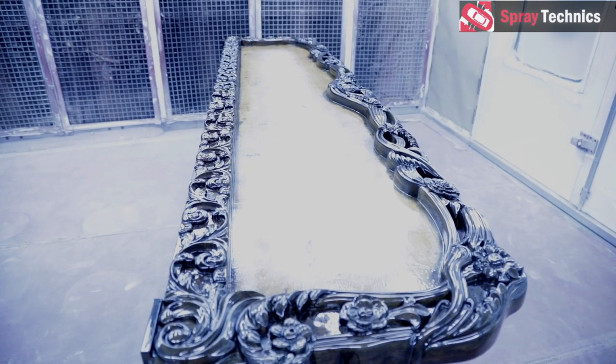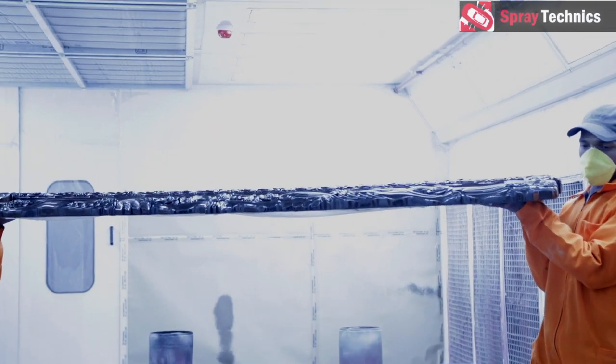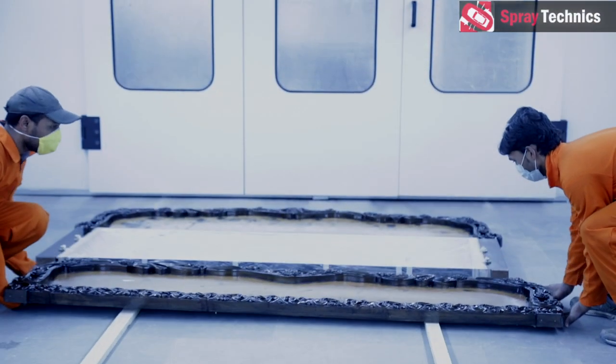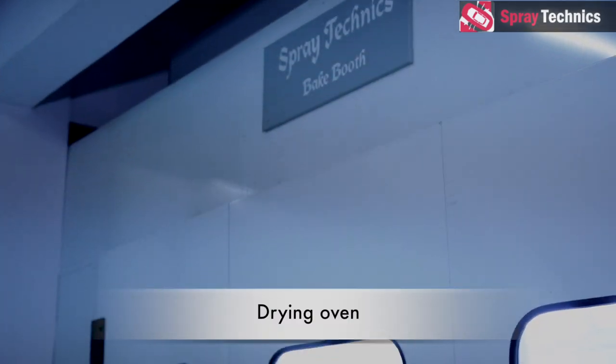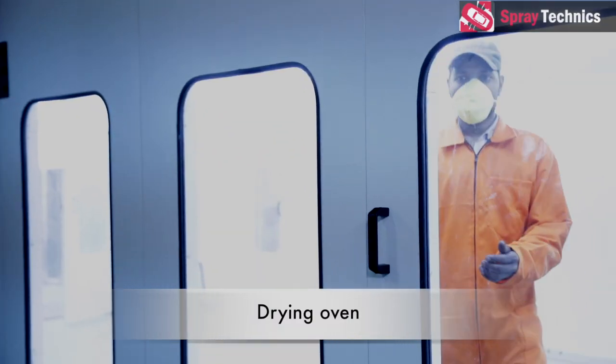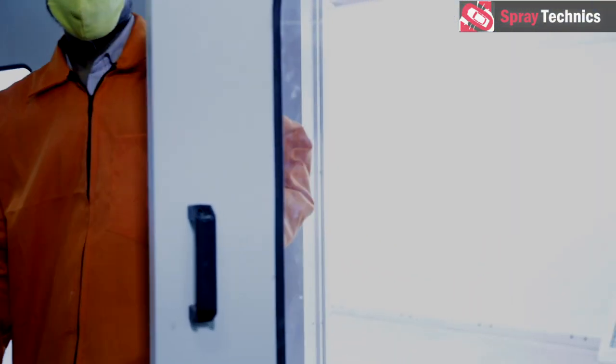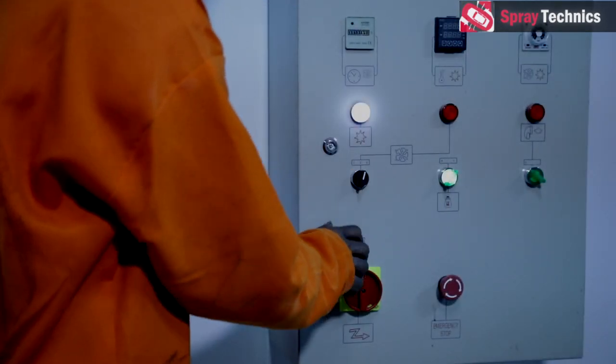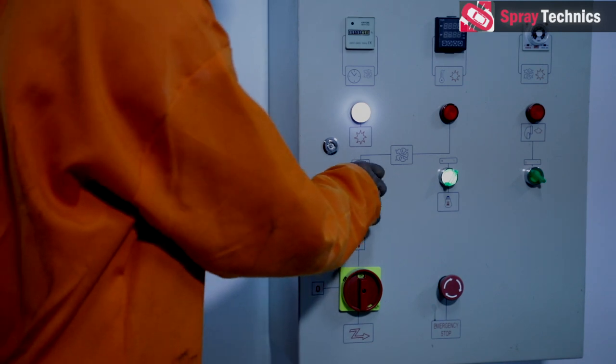After painting, the components are pushed into the drying oven. The drying oven can go up to a temperature of 90 degree Celsius.